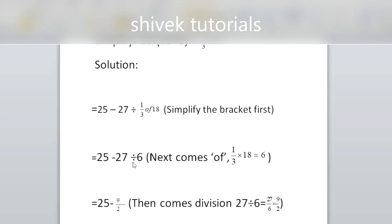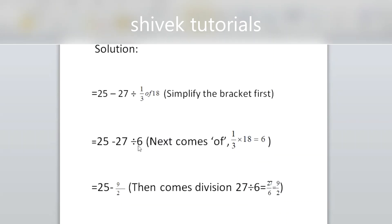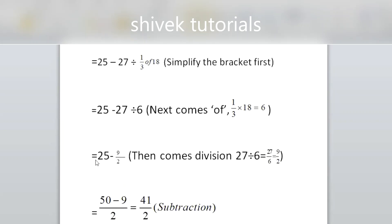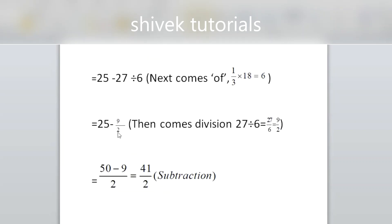Now comes division. We have to solve this term together first: 27 divided by 6. These two terms come in the table of 3 — 3 nines are 27, 3 twos are 6. So we solve this term first and write 9 by 2. We keep the remaining terms as they are because we are solving one at a time according to BODMAS.